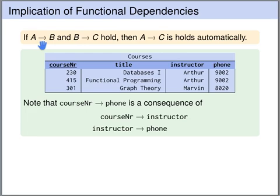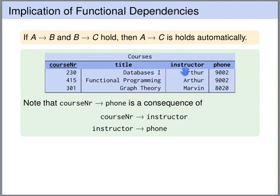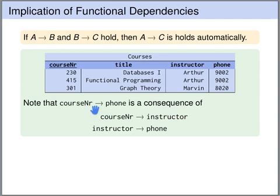If we have a functional dependency A uniquely determines B, and B uniquely determines C, then these two together imply that we also have a functional dependency A uniquely determines C. In the courses table, the course number uniquely determines the instructor name, and the instructor name uniquely determines the phone number. These two imply that the course number uniquely determines the phone number, so it suffices to specify these two functional dependencies and the third automatically follows.